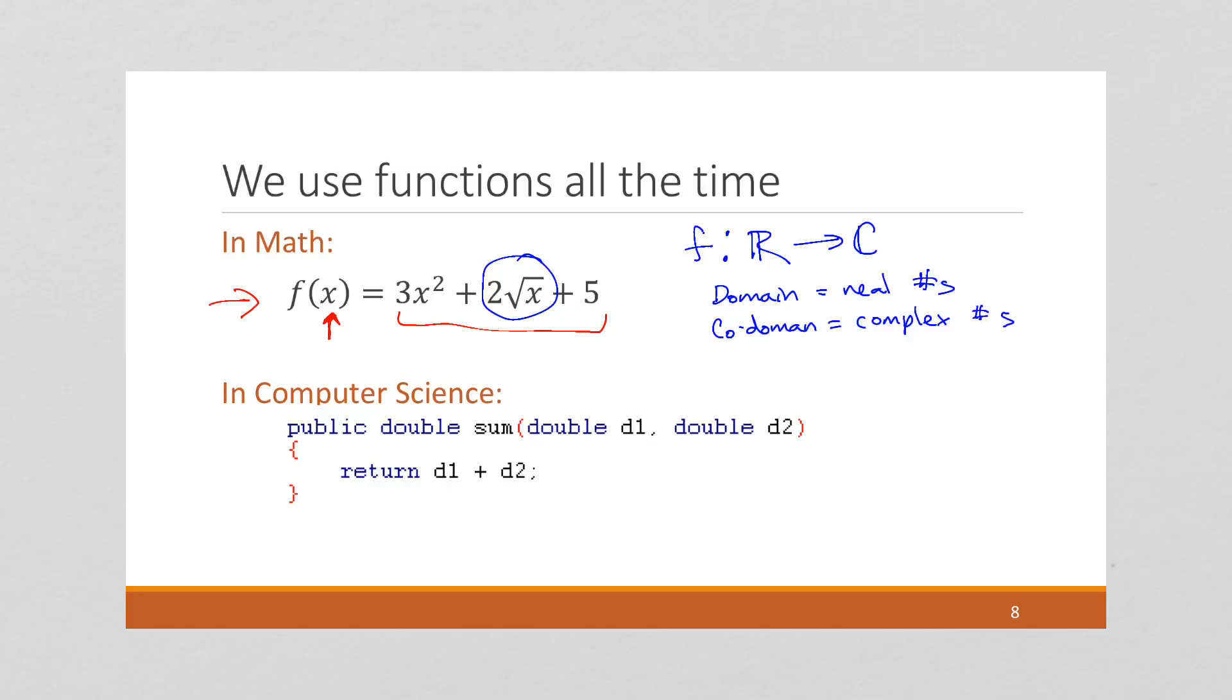And our codomain equals the complex numbers. Right. If you somehow restricted this to only taking positive real numbers, then your codomain would be the real numbers. But without any additional information, we are not restricting it. Imaginary numbers are allowed, which means our codomain is complex.